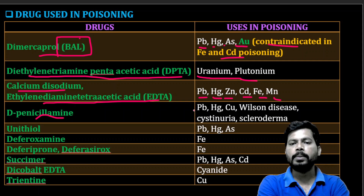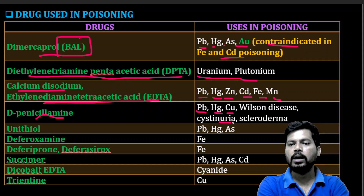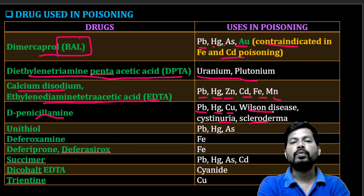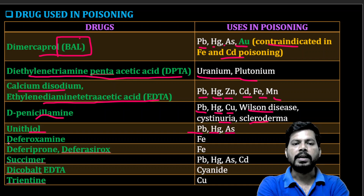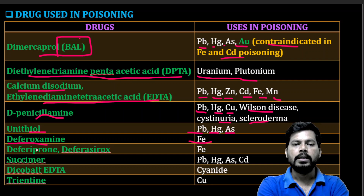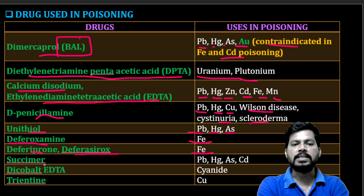D-penicillamine is used as an antidote for poisoning by lead, copper, and cyanide, and is also used in scleroderma. It is majorly used for treatment of Wilson's disease. Unithiol is an antidote for lead, mercury, and arsenic poisoning. Desferioxamine and deferiprone are antidotes for iron overdose poisoning.